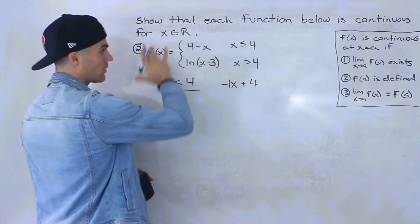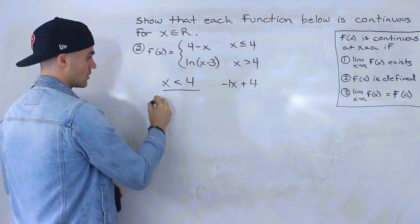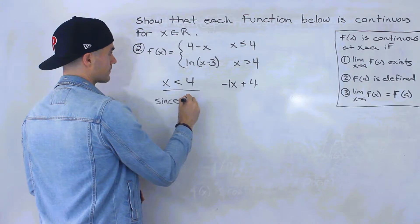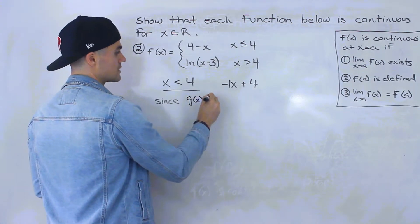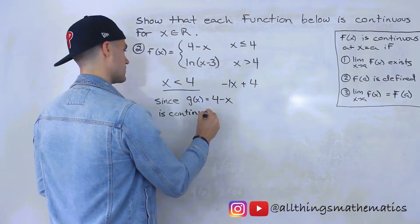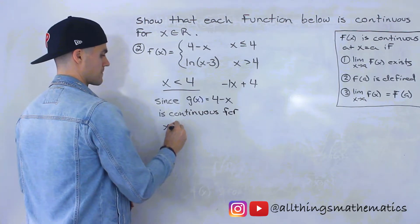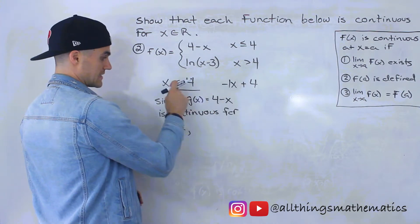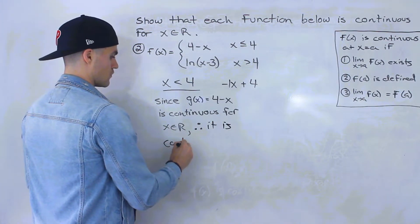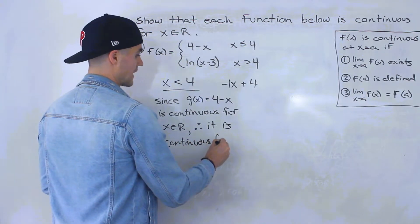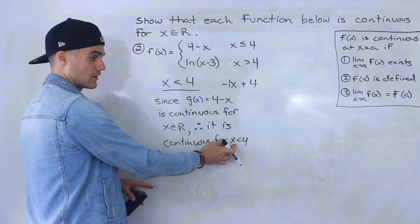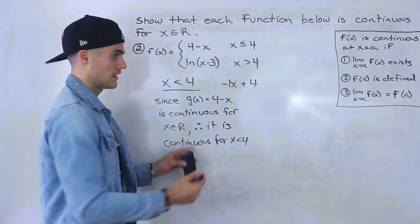If we just look at this function on its own, not as part of the piecewise function, since g of x equals 4 minus x is continuous for x ∈ ℝ, that means it's going to be continuous for x values less than 4, because x values less than 4 is within x ∈ ℝ.